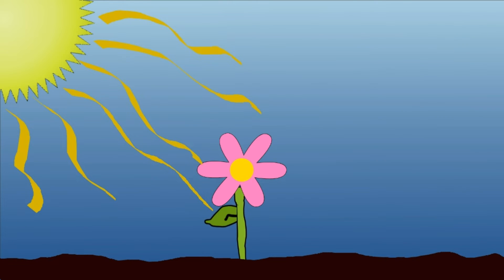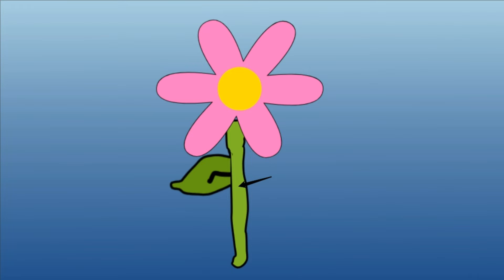The plants absorb the sun's light energy using chlorophyll, like a sponge. Chlorophyll is a green substance on the outside of the plants.